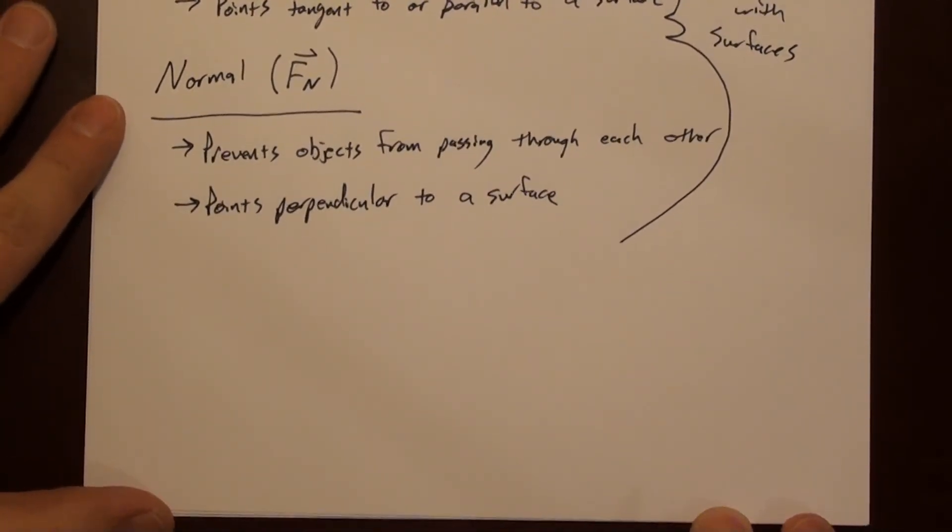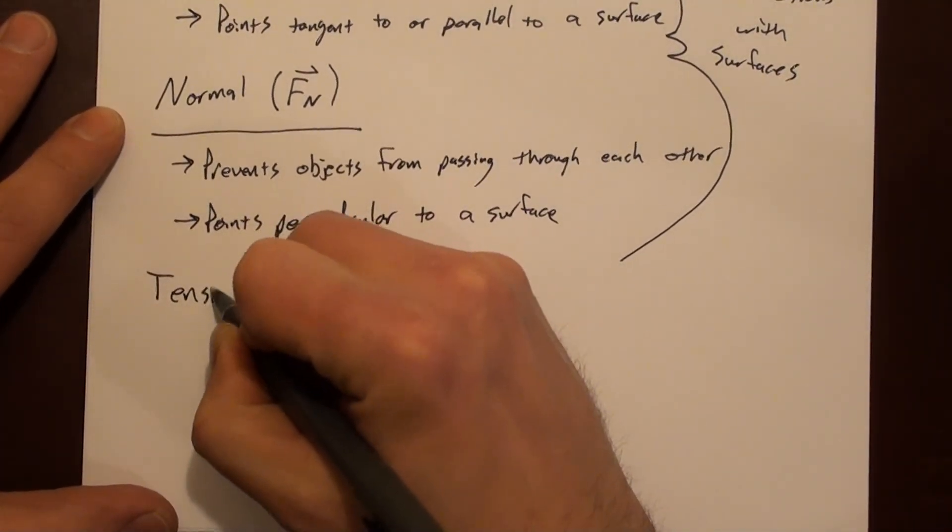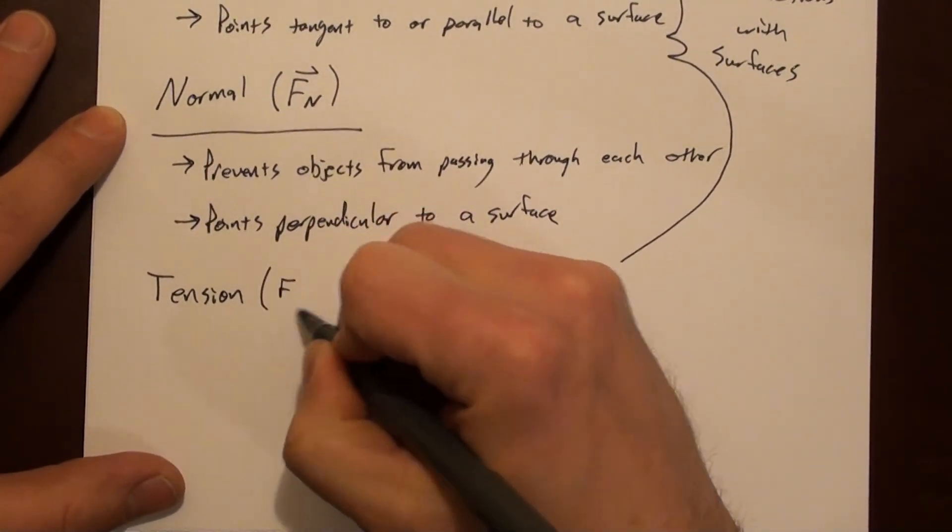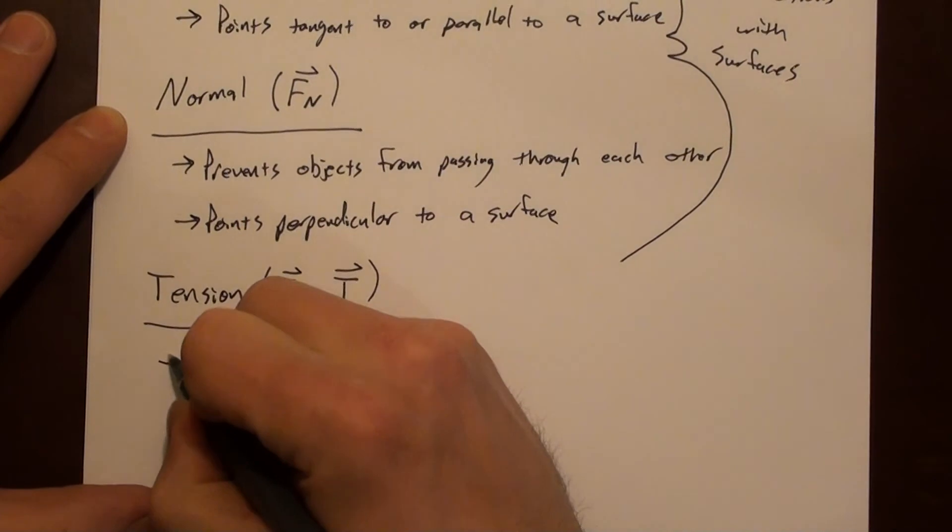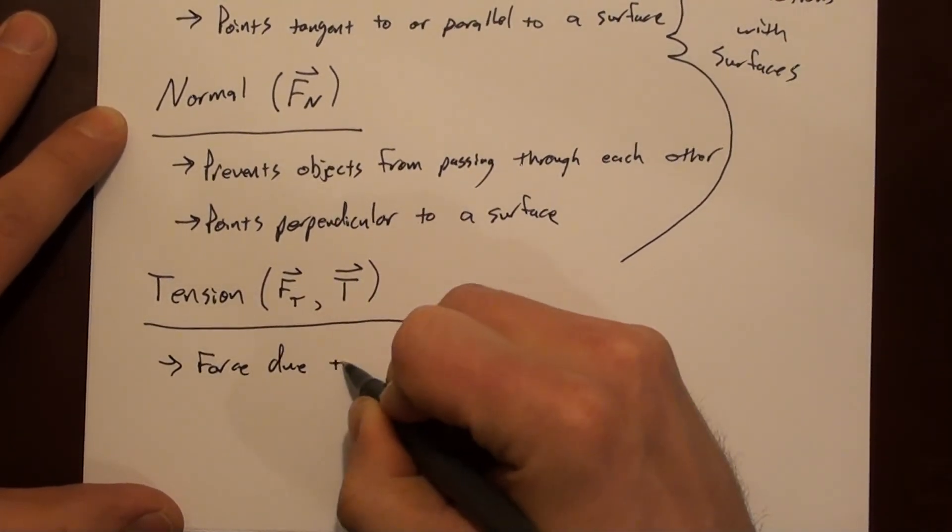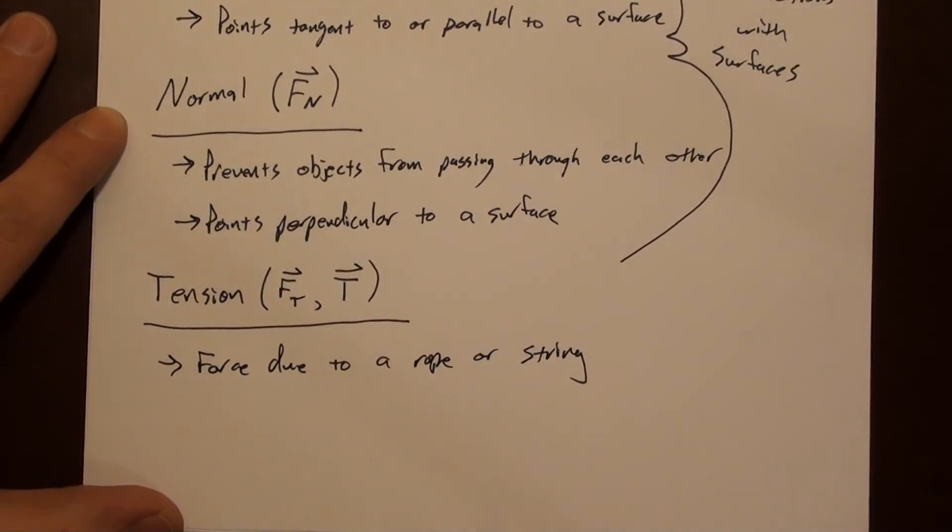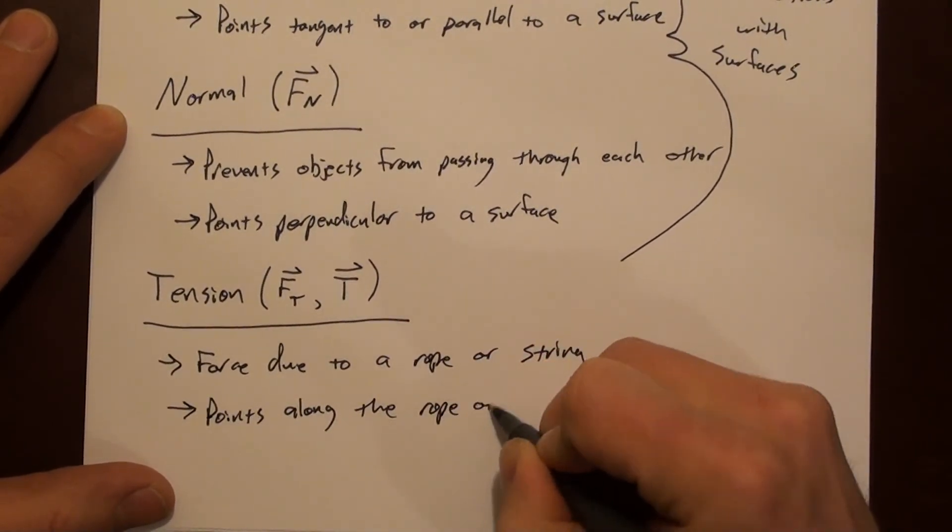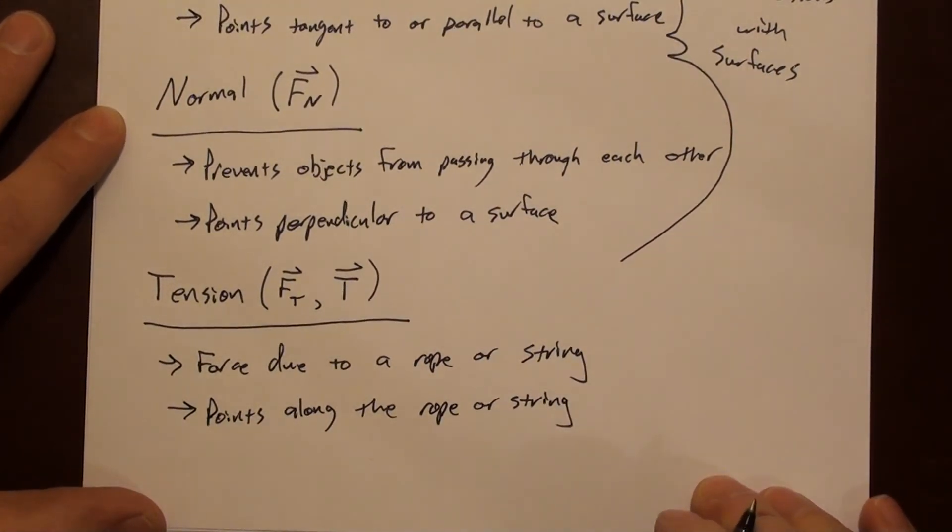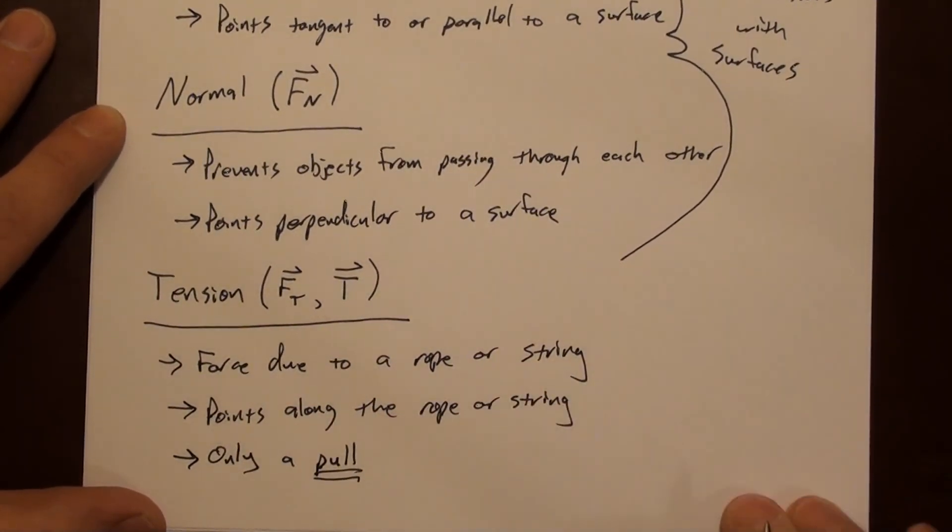And one final force that we can talk about. Again, this is not a complete list, but it's a good introduction, is tension. Sometimes I'll use F sub t or just a t. Tension is the force due to a rope or a string. And this is always directed parallel to the string. This points along the rope or string. That kind of makes sense, and tension can only be a pull, because you can't push something with a rope.